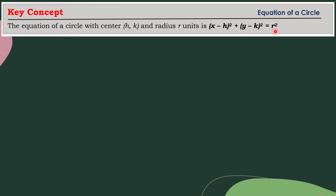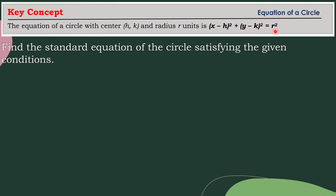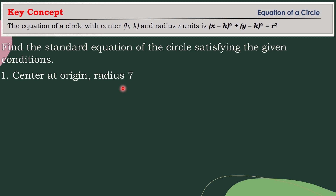Let's have an example. Find the standard equation of a circle satisfying the given conditions. Number one: the center is at the origin and the radius is 7. So how are we going to find its standard equation given these conditions?